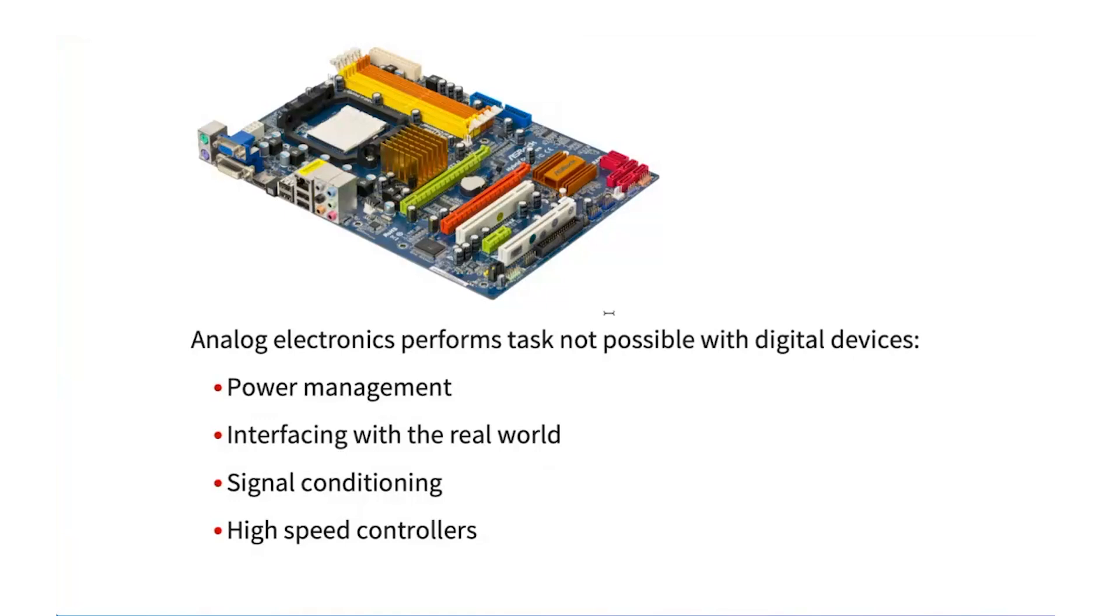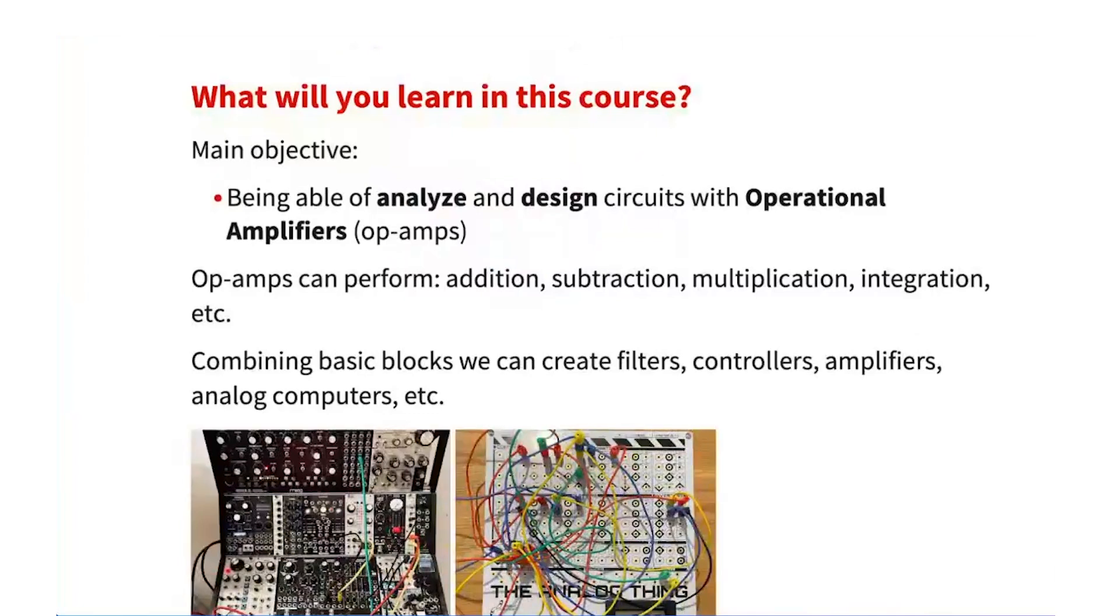And the role of all these analog components could be for example power management, which is giving energy to all the different subsystems that the computer has. It can also help us to interface with the real world, for example, to produce audio signals. And the role of analog electronics is also to adjust the levels of signals or doing signal conditioning in order to read information from sensors. And one big advantage of analog electronics is that it can be used in high speed controllers because analog electronics is quite fast compared to digital.